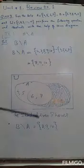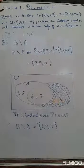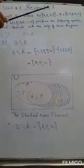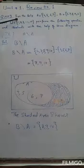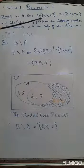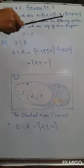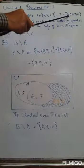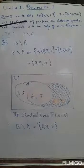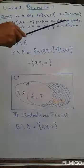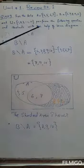In this lecture, we have review exercise one, question number three. The statement of question number three is: for the sets A = {4, 5, 6, 7}, the elements of set B = {6, 7, 8, 9, 10}, and the elements of U = {1, 2, 3, ..., 12}. Perform the following operations and illustrate with the help of a Venn diagram.